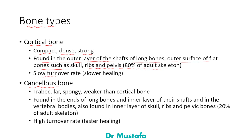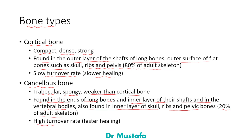Cortical bone has a slow turnover rate, meaning it heals slower than the cancellous bone. The cancellous bone — also called the trabecular or spongy bone — is weaker than cortical bone. It is found at the ends of long bones, the inner layer of their shafts, the vertebral bodies, the inner layer of the skull, the ribs, and pelvic bones. It makes up 20 percent of the adult skeleton and has a high turnover rate, meaning it heals faster than cortical bone.